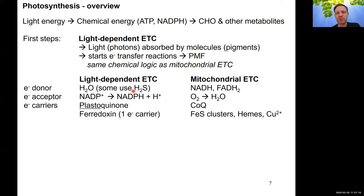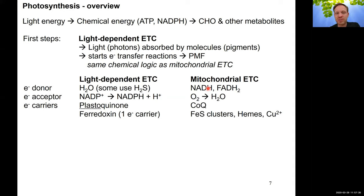Comparing the two systems: the electron donor differs — in the mitochondrial ETC we used NADH and FADH2, whereas in the light-dependent ETC we use water. The electron acceptor also differs: in the mitochondria we used oxygen, but here we use NADP+ to generate NADPH. A few organisms like bacteria in sulfur-rich environments use H2S instead of water as the electron donor.